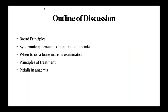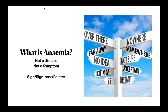The outline of our discussion today covers: the syndromic approach, which can be very useful when you look at a patient; when to do a bone marrow exam — a very difficult investigation; the broad principles of treatment; and finally the pearls and pitfalls in anemia. Lastly, I have two case vignettes for you.